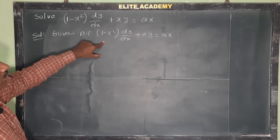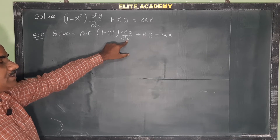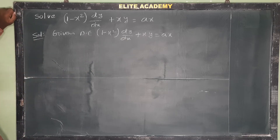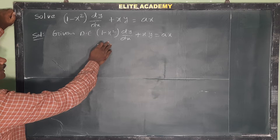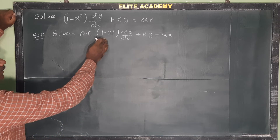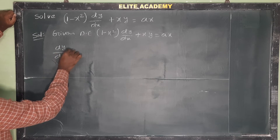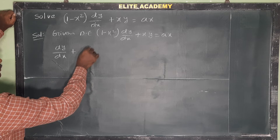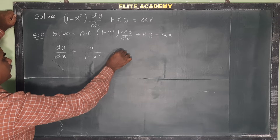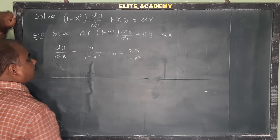It is not in general form. So we need to convert it to general form where dy/dx is isolated. We divide the entire equation by (1 - x²). After dividing, it becomes: dy/dx + x/(1 - x²) · y = ax/(1 - x²).